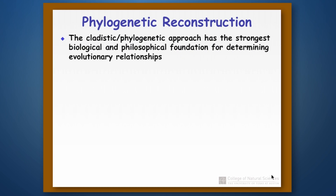Phylogenetic reconstruction — we have already talked about different ways of doing classification systems, and we have shown that the cladistic or phylogenetic approach really has the strongest biological and philosophical foundation for figuring out evolutionary relationships.